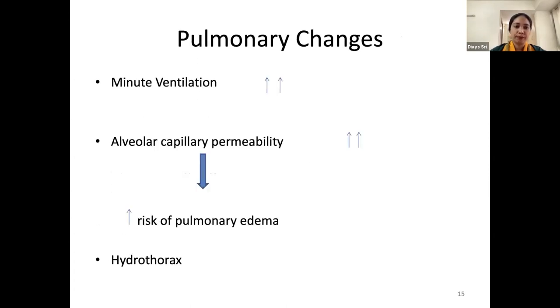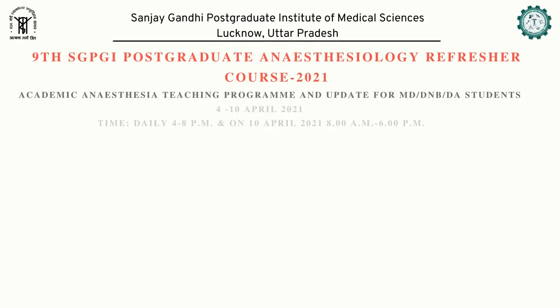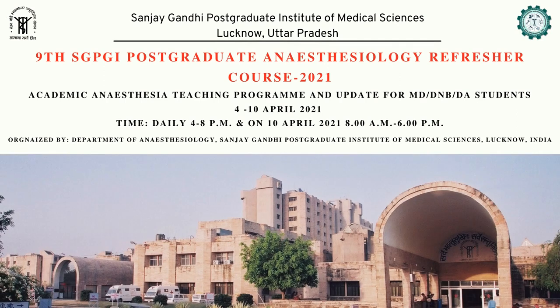Arrhythmias may occur due to the cardiomyopathies that accompany the disease or because of electrolyte imbalances. Regarding pulmonary changes, minute ventilation is increased in these patients, there is increased capillary permeability, and there is a significant risk of pulmonary complications.